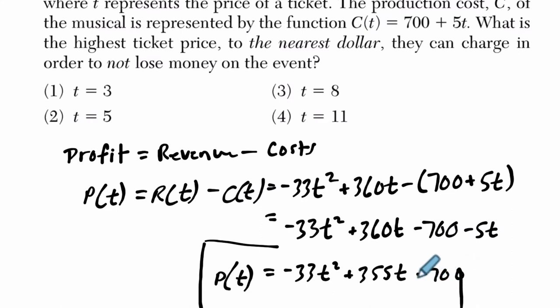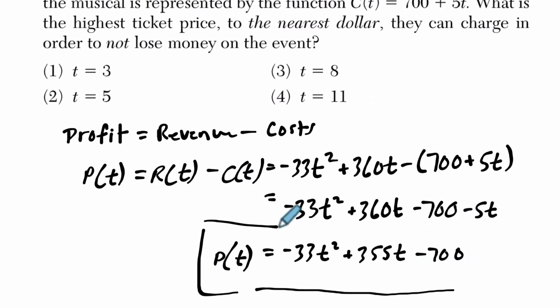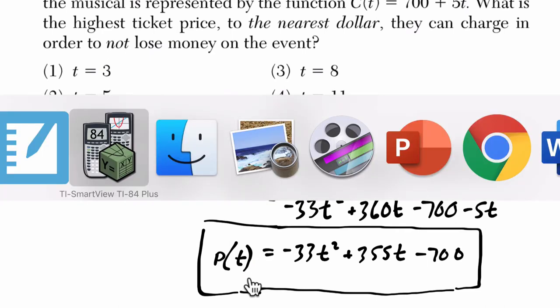Now the idea is that this profit function will show you a lot of things. It'll show you, is there an optimal ticket price to charge? It'll show you how much can you charge before you lose money? What's the smallest amount you could charge to make something? But in order to figure that out, let's just graph this thing.